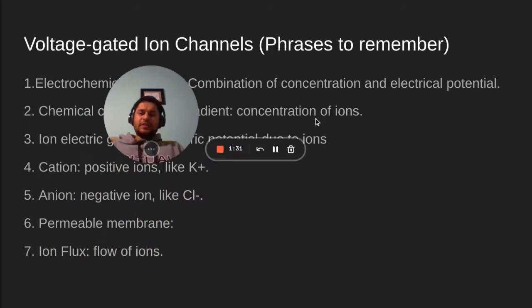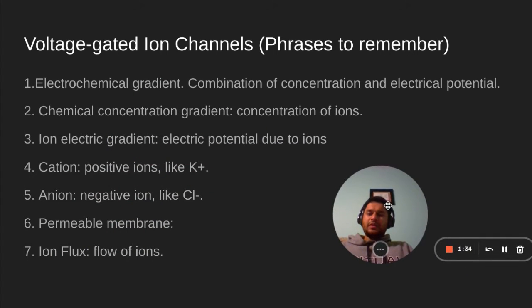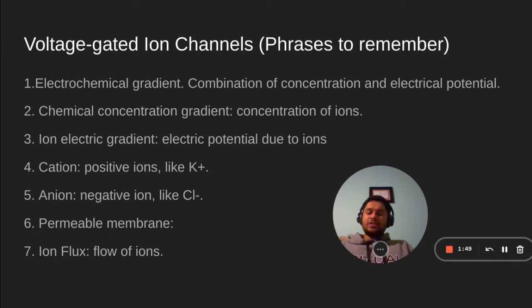So these are the phrases to remember. Electrochemical gradient — this is a combination of concentration and electrical potential. Chemical concentration gradients refer to the concentration of ions. Ion electric gradient is the electric potential due to ions — cations, which are positive ions like potassium, and anions which are negative ions like chlorine.